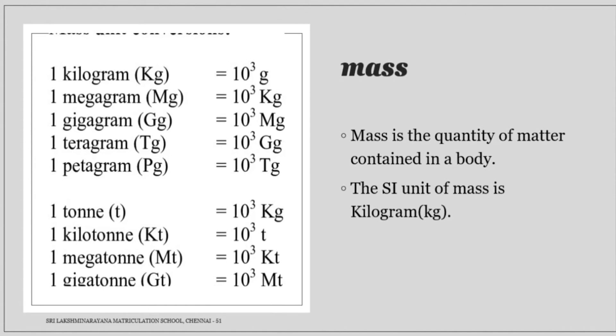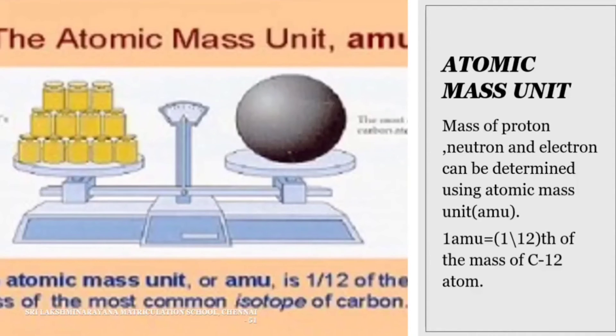Next topic is atomic mass unit. The mass of proton, neutron and electron can be determined using atomic mass unit (amu). 1 amu is equal to 1/12 of the mass of carbon-12 atom.